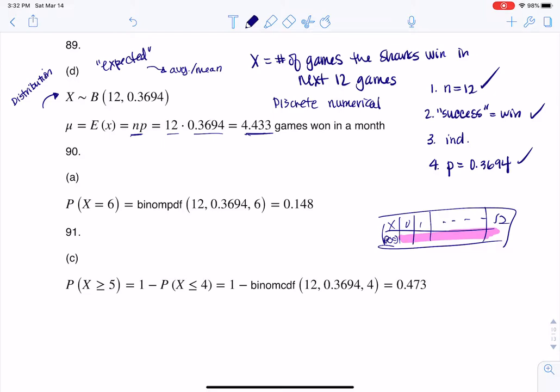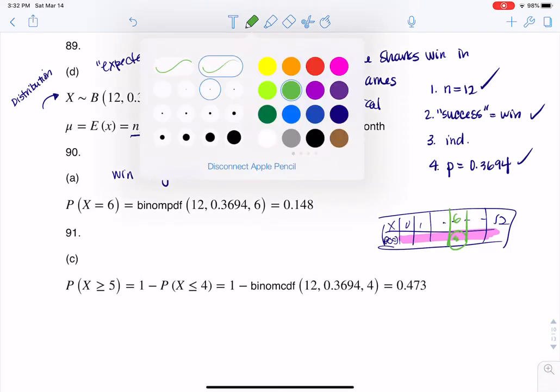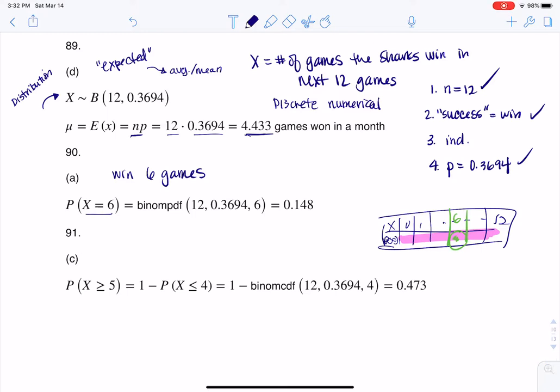And then for 90, it said, what was the probability that they'll win 6 games in the next month? So if I want them to win 6 games, that means I want to find, and I'll change pen colors here, I would like to find, let's not use pink let's go green, whatever number was under 6. That's the one I want. If I could figure out whatever this probability was, I'd be good to go.